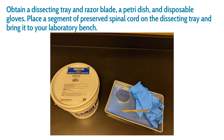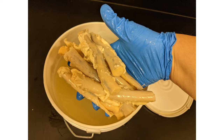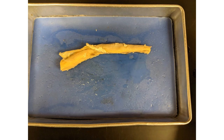Finally, we'll take a look at a cow spinal cord. Obtain a dissecting tray, a razor blade, a petri dish, and disposable gloves. Place a segment of preserved spinal cord on the dissecting tray and bring it to your laboratory bench. The spinal cords come in a pail, and you have to take off the lid and stick your hand down into the fluid to find them — and there is one on our dissecting tray.